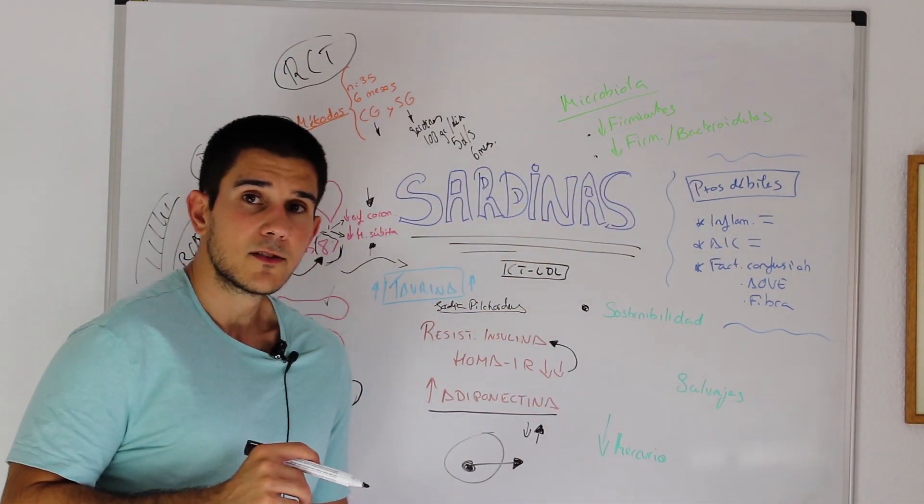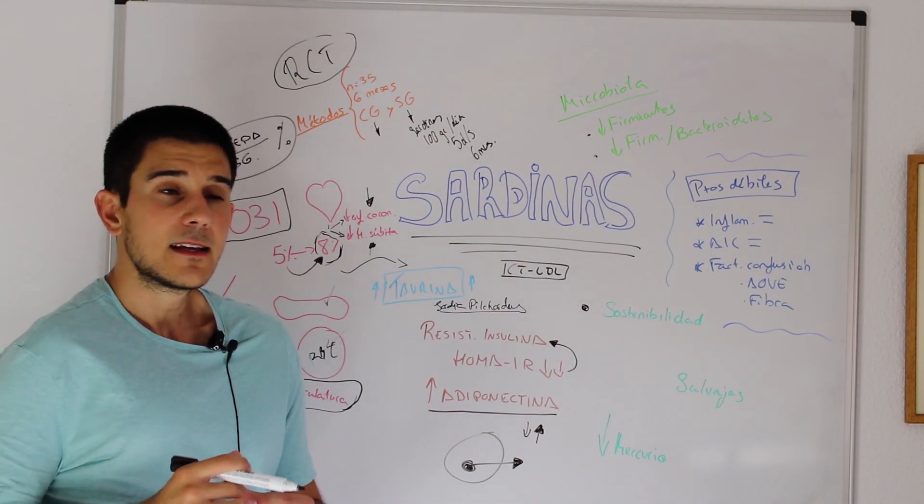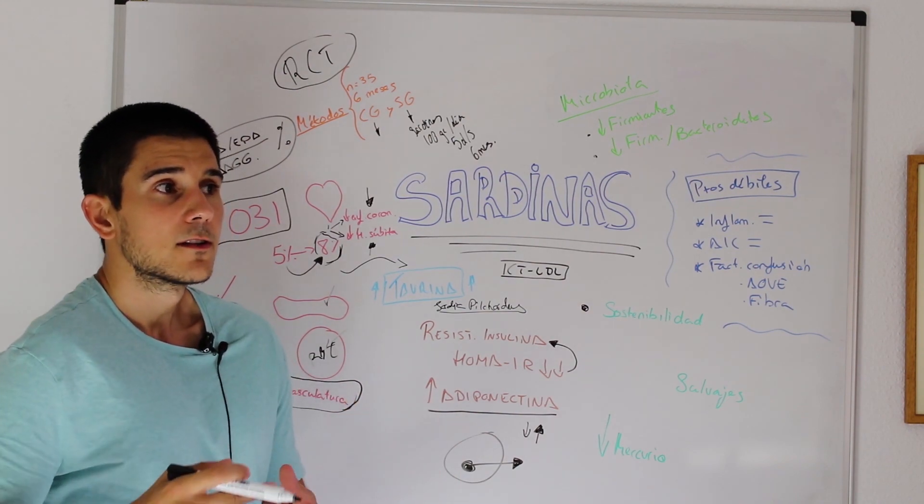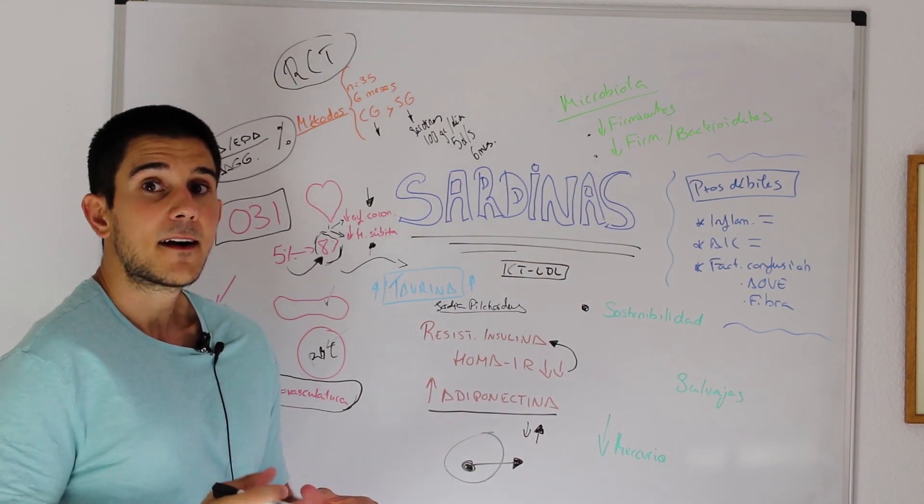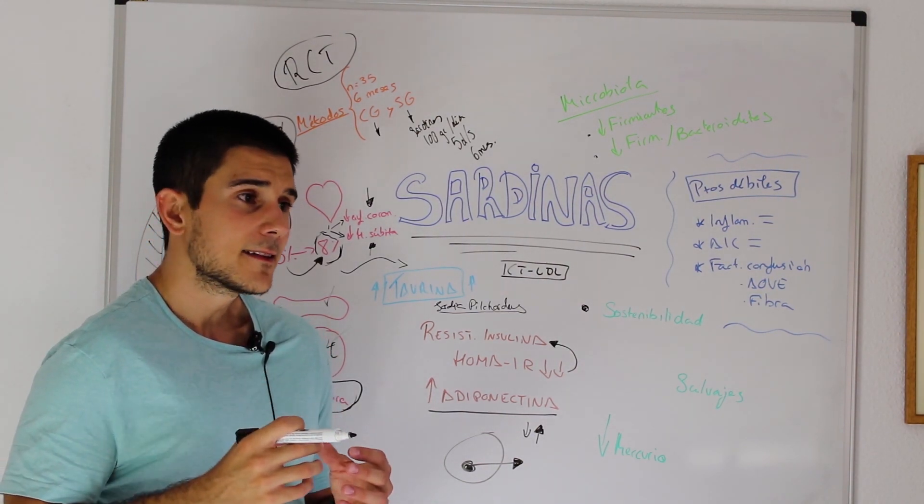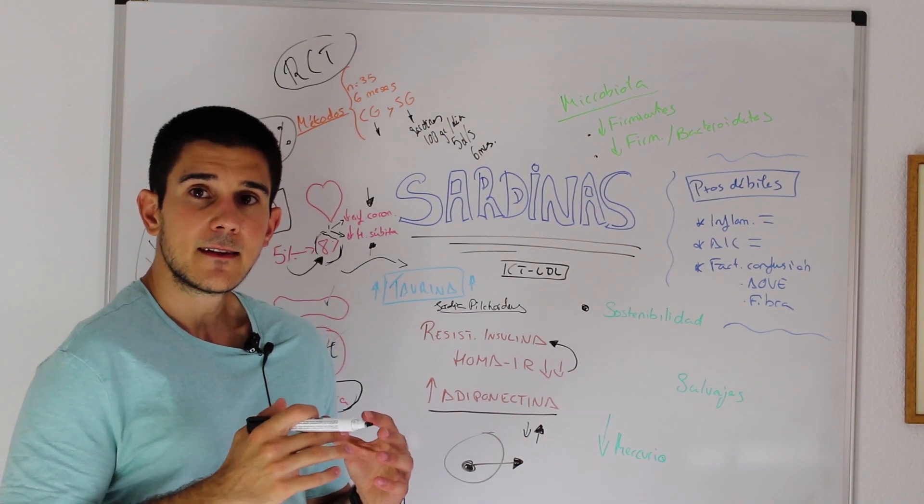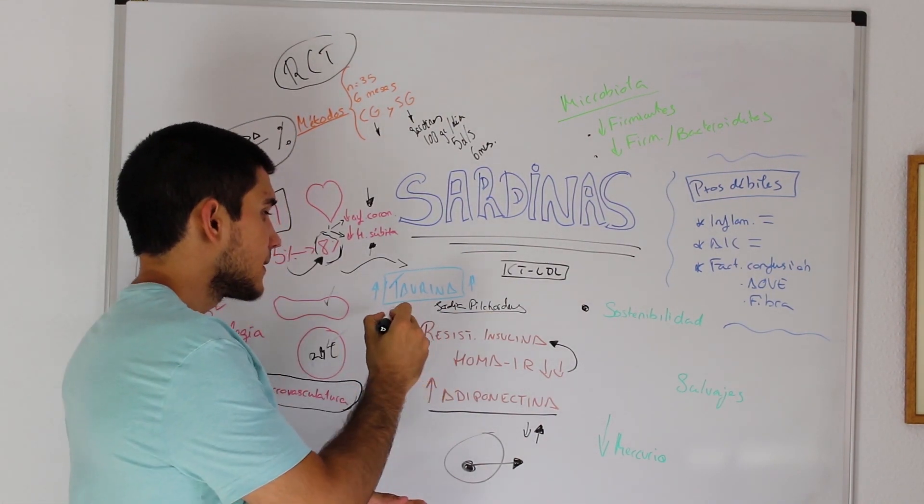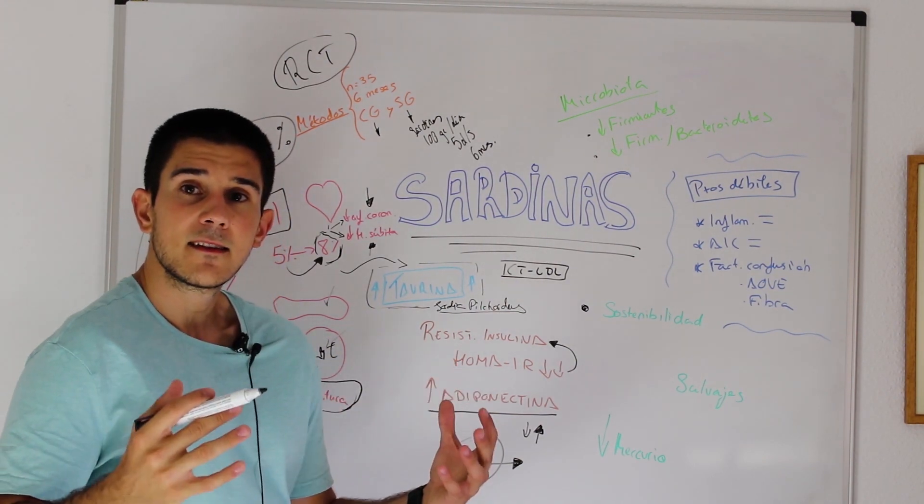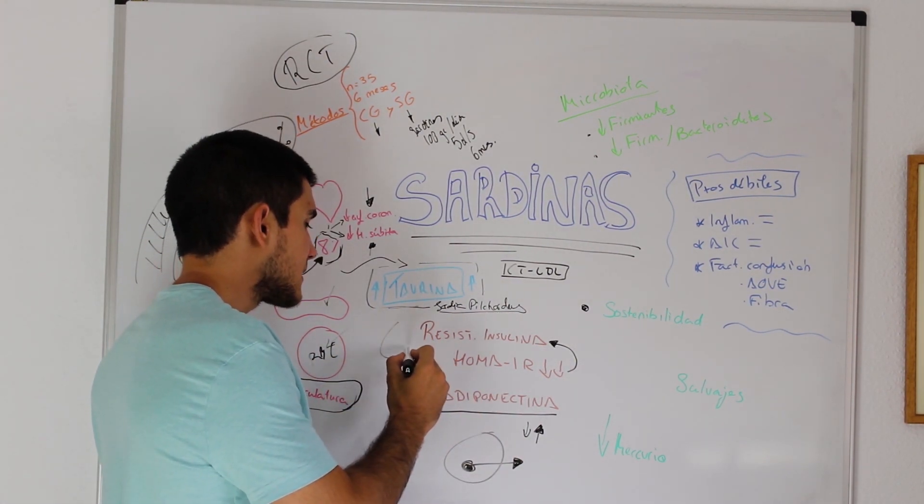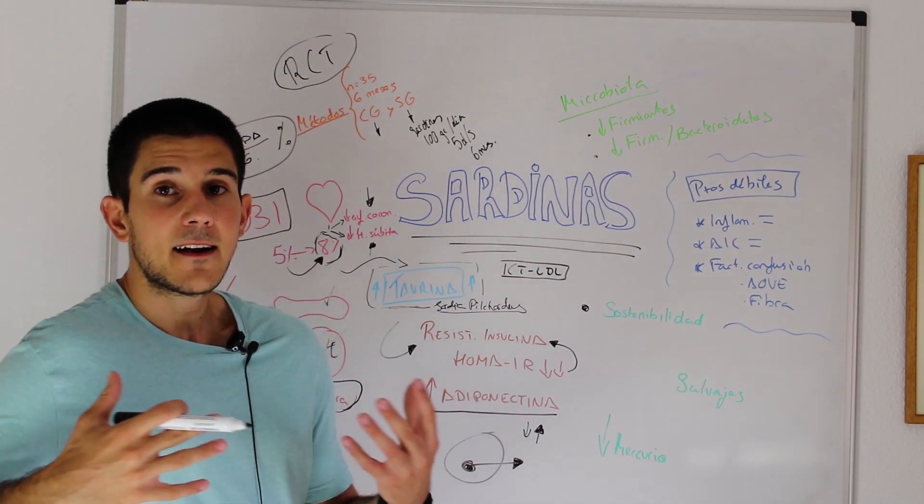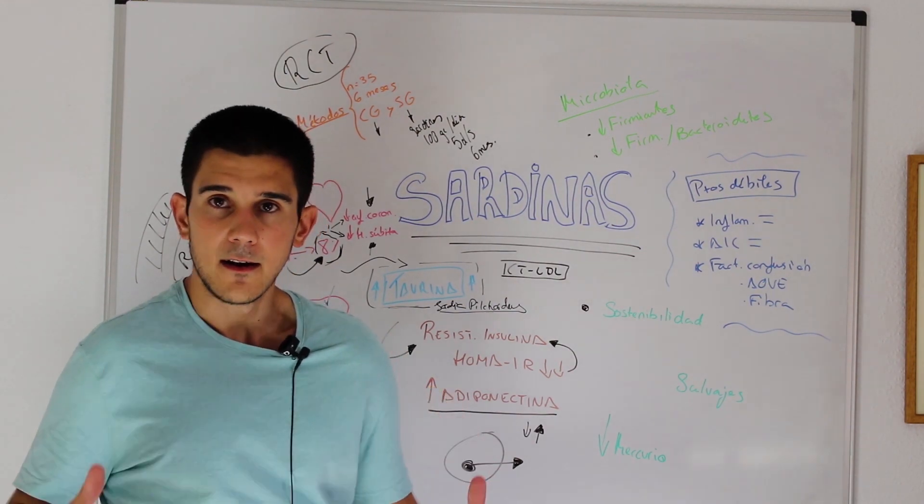Another consideration, another aspect to consider is the hypothesis that in fish there are other things that contribute to improvement of cardiovascular health that are not omega-3. Actually, we find some specific proteins and amino acids in fish that are very interesting in terms of health. Taurine is one of them. Taurine is a sulfur amino acid that is related in animal studies with improvement of insulin resistance.